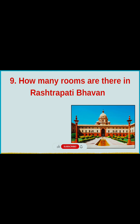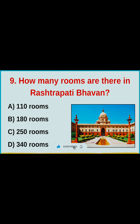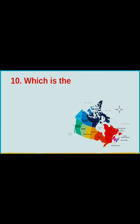Question number 9: How many rooms are there in Rashtrapati Bhavan? Your options are: A. 110 rooms, B. 180 rooms, C. 250 rooms, D. 340 rooms. The correct answer is option D, 340 rooms.